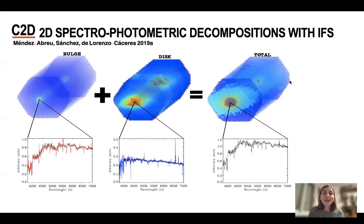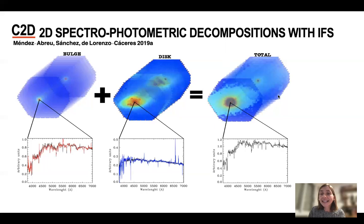Let me show you an example. We have created a mock bulge and disk galaxy using an elliptical galaxy for modeling the bulge light and an almost pure disk galaxy for modeling the disk, and we have run it through C2D. C2D provides two IFS data cubes — one for the bulge and one for the disk.